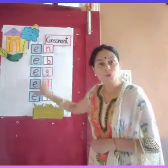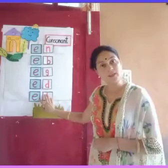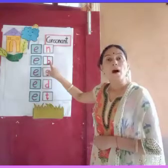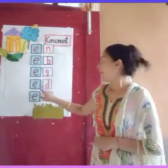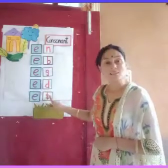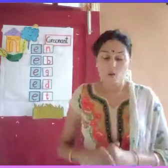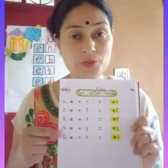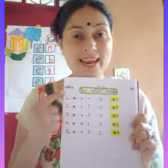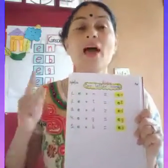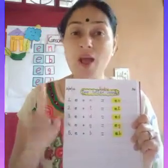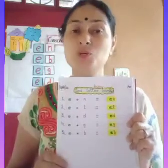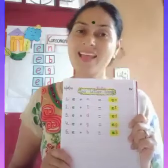So let's do the reading of these five two-letter words again: en, eb, eg, ed, et. Now write down these two-letter words of E sound in your English notebook. Don't forget to write the date, day, class work, and heading. And while writing, you have to do reading also — reading is very important. So this is your today's class work. Bye bye, have a nice day.